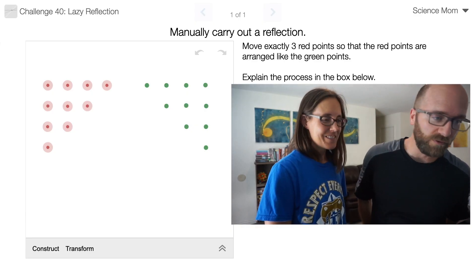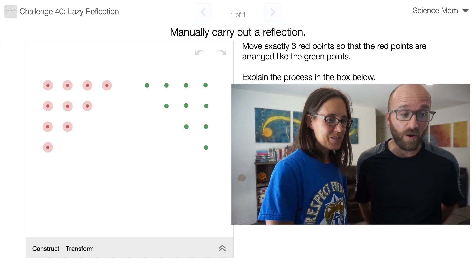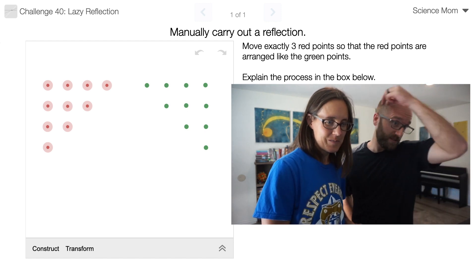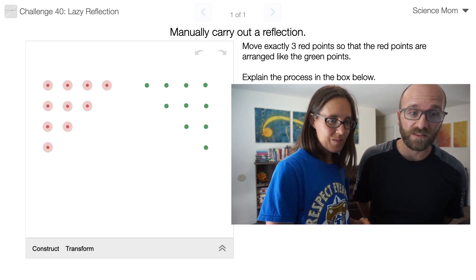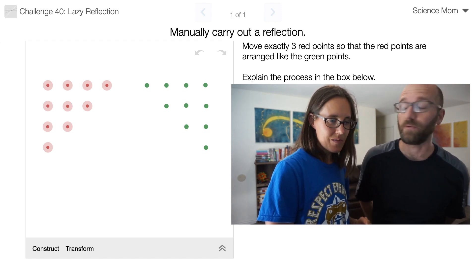I have another geometric problem for you. We have these ten red points and the ten green points. Your challenge is to move exactly three of the red points so that the red points are arranged like the green points.